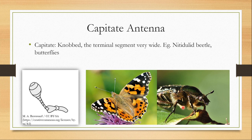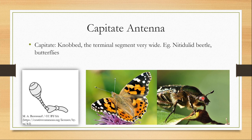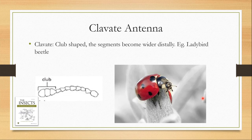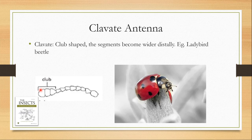Now I am going to talk about the capitate or knobbed antennae. Here the terminal segments are very wide. It is found in butterflies and nitidulid beetles. Many authors club the clavate and capitate antennae together, but in many books you would find them separately. In clavate antennae the segments become uniformly thickened toward the end, forming a longer club-shaped structure. In capitate antennae only the terminal segments form a knob-like structure.